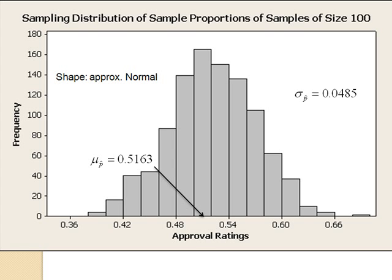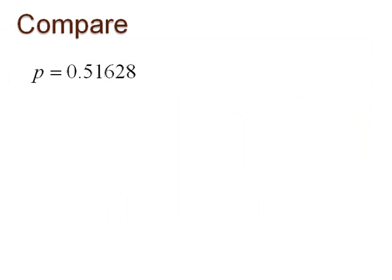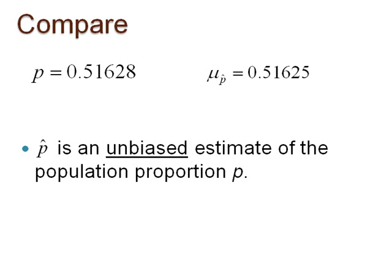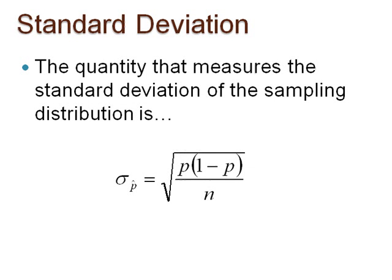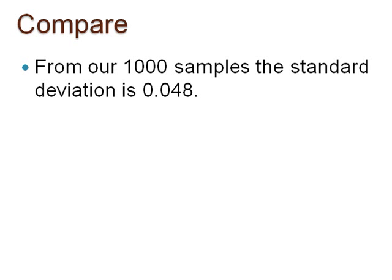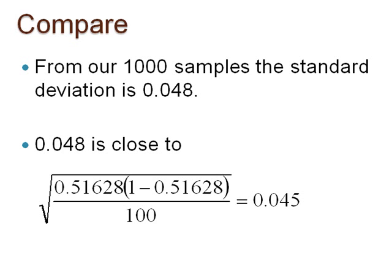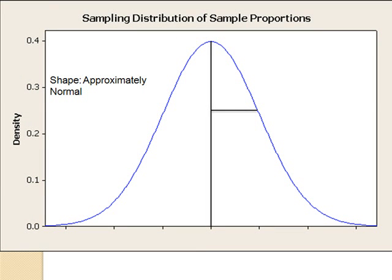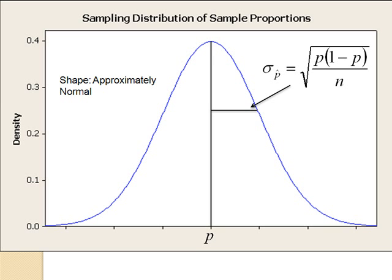From our data, we see the population proportion of 0.51628 is approximately equal to the mean of the sampling distribution of p-hats, which is 0.51625. In general, it is known that p-hat is an unbiased estimate of p because the mean of the sampling distribution of p-hats equals the population proportion p. In addition, the standard deviation of this distribution is very close to the square root of p(1 minus p) over n. The standard deviation of the 1,000 sample proportions equals 0.048, which is close to 0.045 obtained using the population proportion 0.51628 in this formula. Therefore, we could assume the sampling distribution of p-hat is approximately normal with mean p and this quantity as the standard deviation. This works best when n is large and p is close to 0.5.